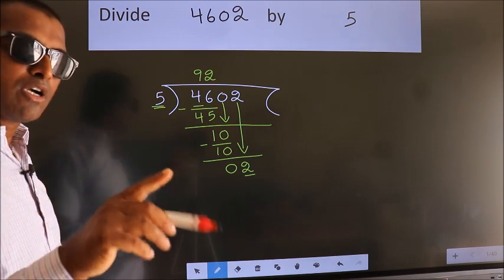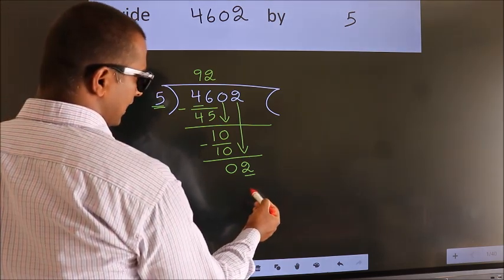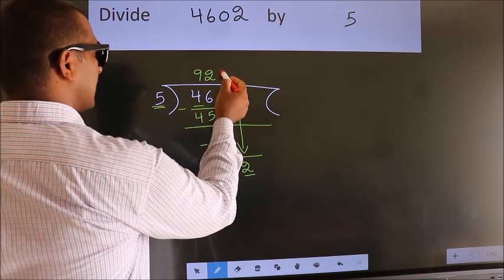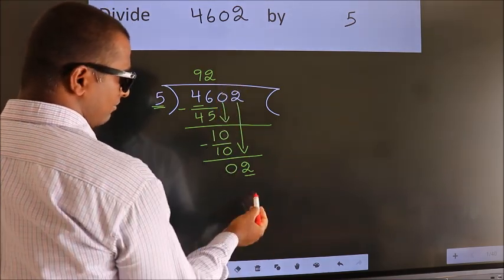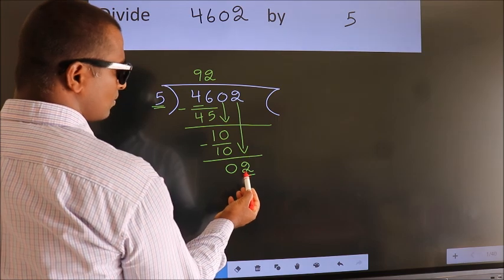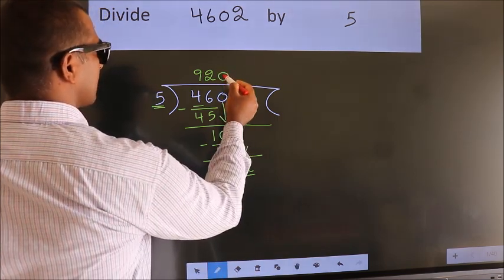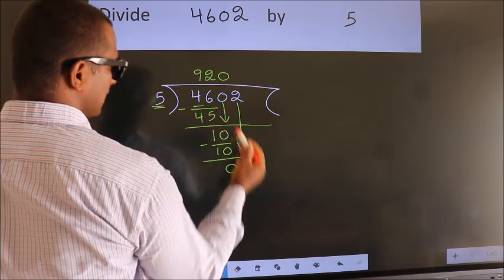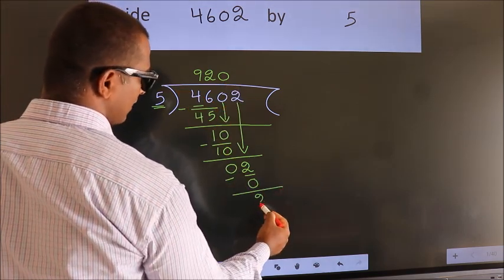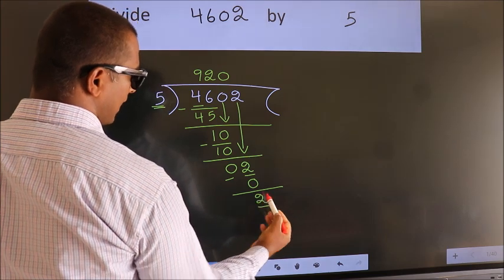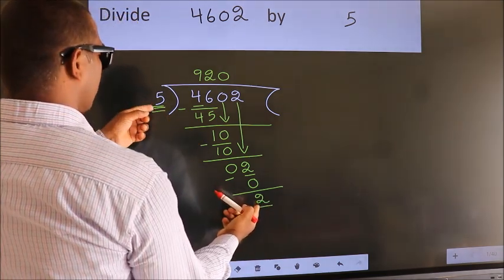Instead of that, what we should think of doing is, which number should be right here. If I take 1, we get 5. But 5 is larger than 2. So, what we do is, we take 0 here. So, 5 into 0, 0. Now, we subtract. We get 2. Here we have 2, here 5. 2 smaller than 5.